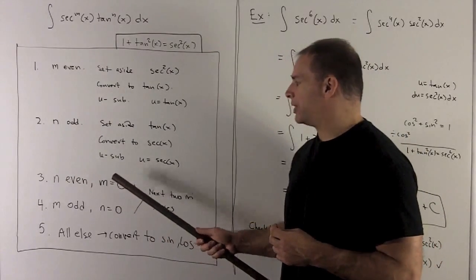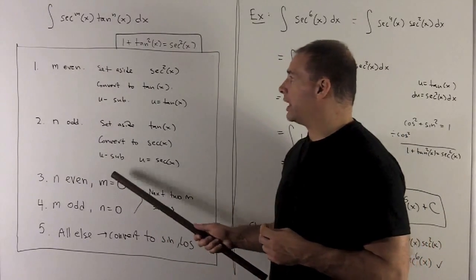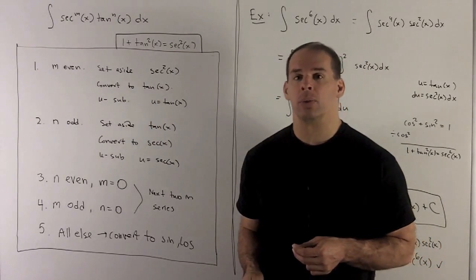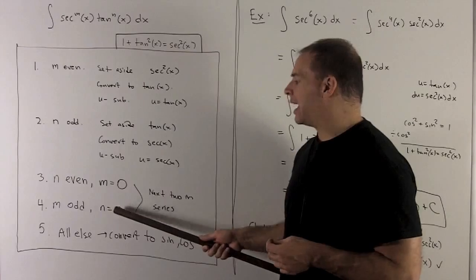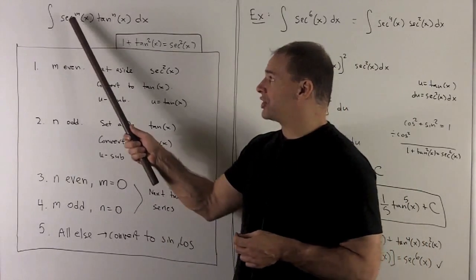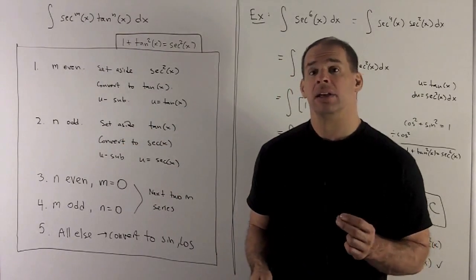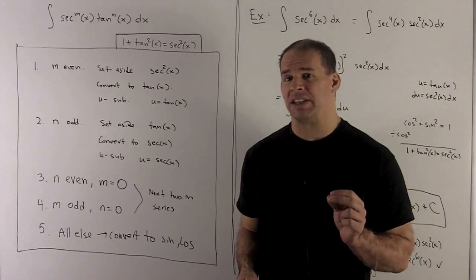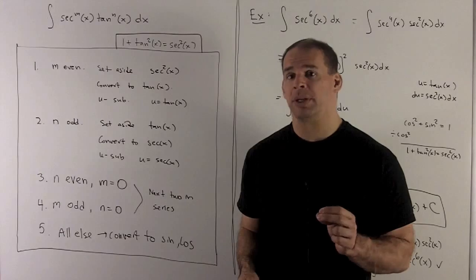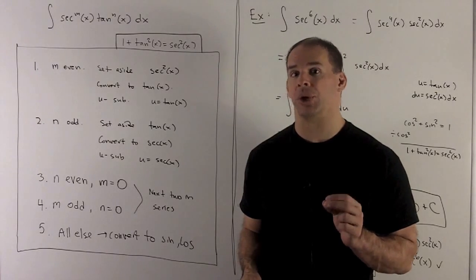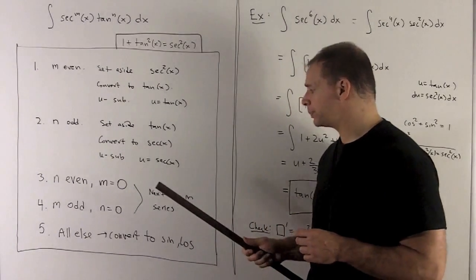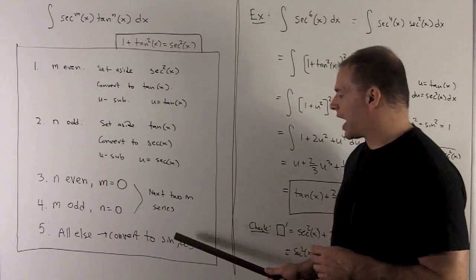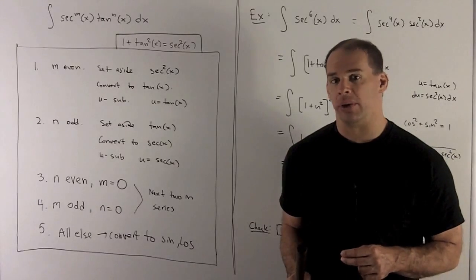If n is even and m equals 0, I'm looking at tangent to an even power — there's a special trick for that which we'll see later. If m is odd and n is 0, so just secant to an odd power, we use integration by parts; we've already seen the case of secant cubed in part 6 of 8.2. And when all else fails, convert to sine and cosine and see if you can proceed.